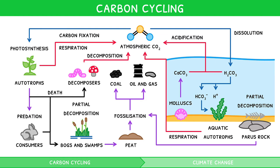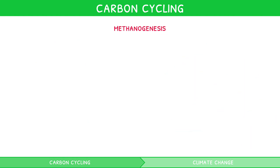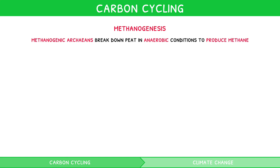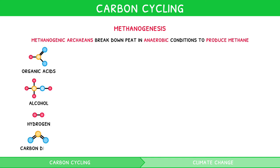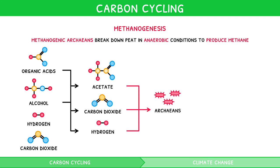Another process that occurs in bogs and swamps, included in the IB syllabus, is methanogenesis. This is a natural process by which methanogenic archaeans break down peat in anaerobic conditions — such as swamps, landfills and muddy lakes — to produce methane. Firstly, bacteria convert organic matter to organic acids, alcohol, hydrogen and CO2. Bacteria then use organic acids and alcohol to produce acetate, CO2 and hydrogen. Archaeans can then convert CO2, hydrogen and acetate to produce methane via two processes.